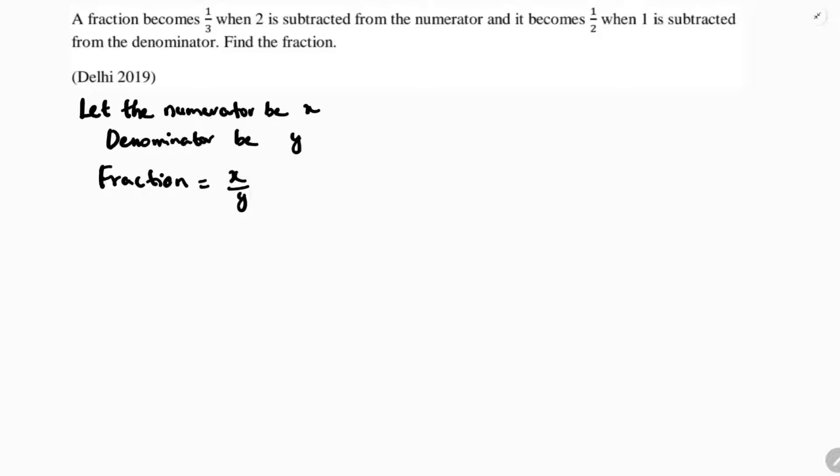Now, we will see the condition. A fraction becomes 1 by 3 when 2 is subtracted from numerator. If 2 is subtracted from numerator, denominator as it is, it becomes 1 by 3. If we cross multiply, 3 times x minus 2 equals y. So, 3x minus 6 equals y, which gives us 3x minus y equals 6, equation 1.